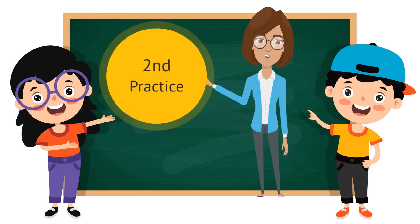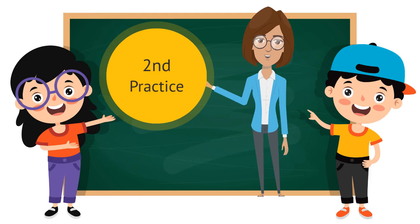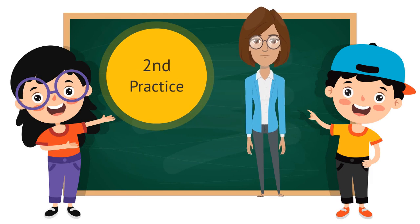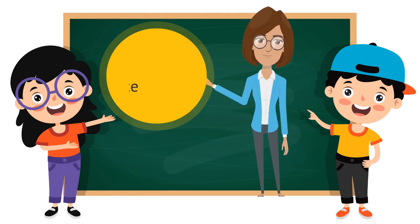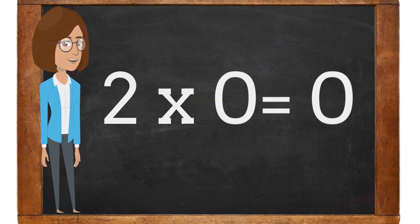Hello, learners. Let's practice our two times tables again. 2 times 0 is 0.